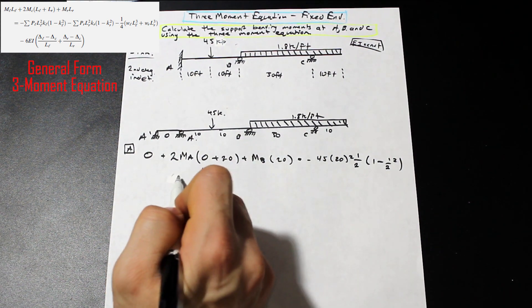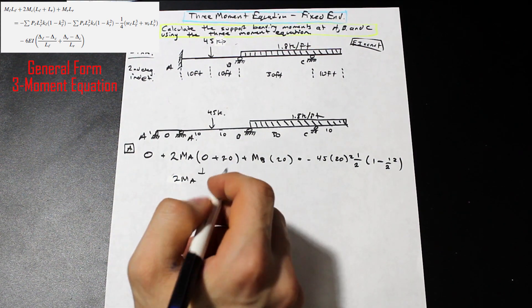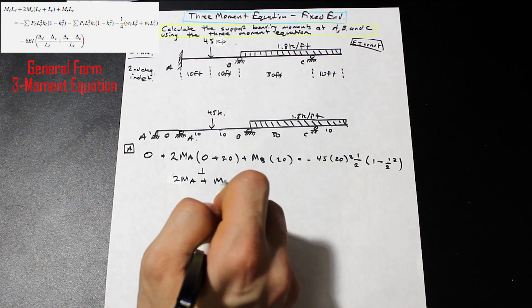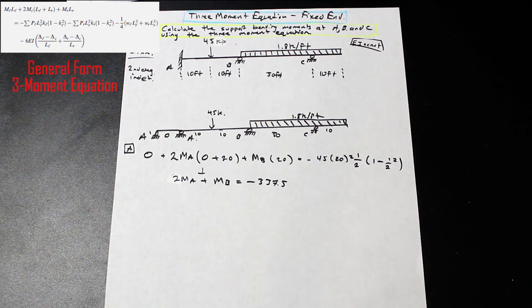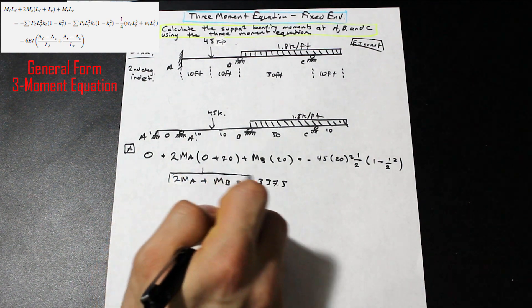And we have our K value here. Remember, if we're at A, K is the distance from B to the point load, not from A to the point load. So the far end to the point load divided by the entire distance. So we have 10 divided by 20. So that's going to be times one half. So divided by I, but I cancels, remember. And then we have 1 minus K squared. So we go ahead and we just simplify this. Put this in our calculator. We're going to get that 2MA plus MB equals negative 337.5. All right, cool. So that's our first equilibrium equation.